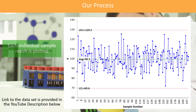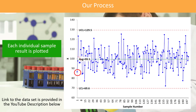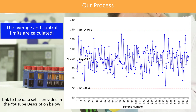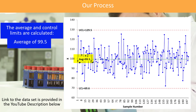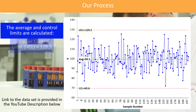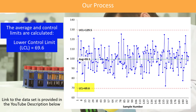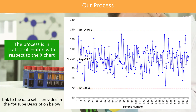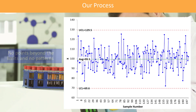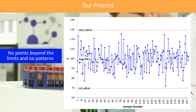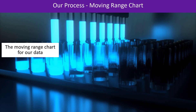Here's the individuals chart for our data — the X chart. Each individual sample is plotted; there are 200 samples and we're plotting them all. We calculate the average and the control limits and add them to the chart. The average is 99.5, the upper control limit is 129.5, and the lower control limit is 69.6. Our process is in control with respect to the X chart — we don't have any points beyond the control limits, and there are no patterns like 7 in a row above or below the average.